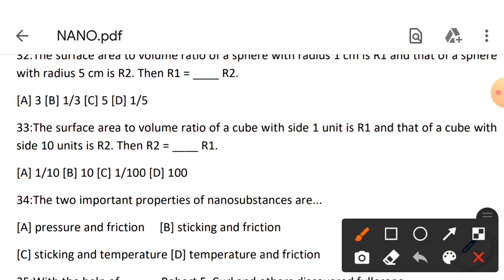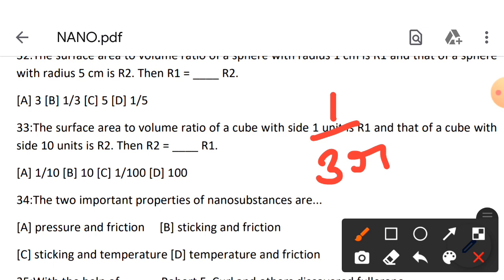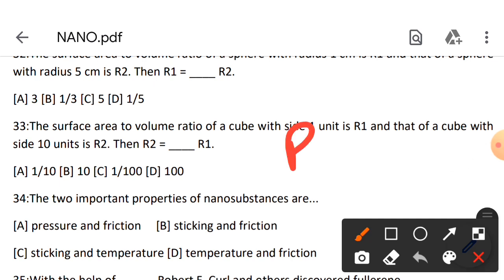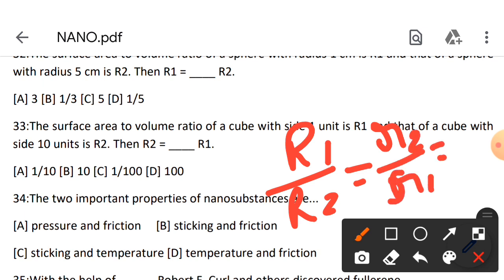We got 1 upon 3 r. Now applying the same situation for R1 and R2. We need to find the ratio of R1 to R2. For sphere 1 it's 1 by 3 R1, and for 2 it's 1 by 3 R2 divided by 1. 3 cancels with 3, so what's left is R2 by R1. The ratio of R1 to R2 is R2 by R1. R2 is 5, R1 is 1. That means small radius.